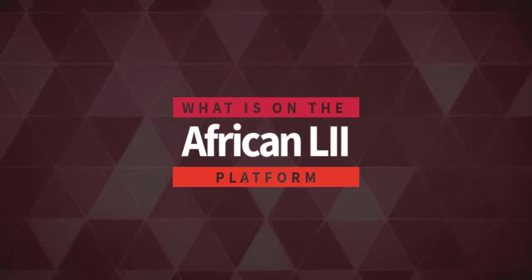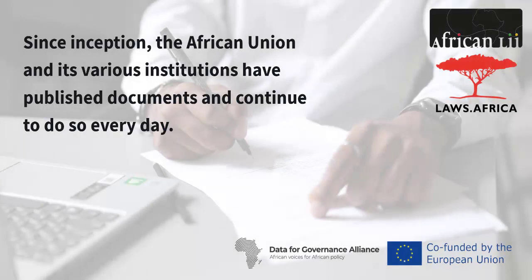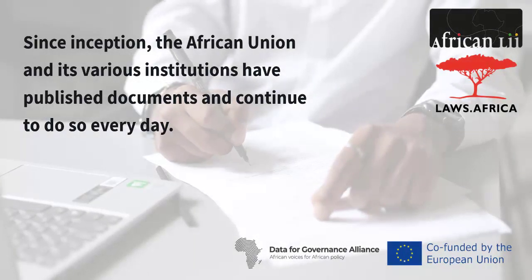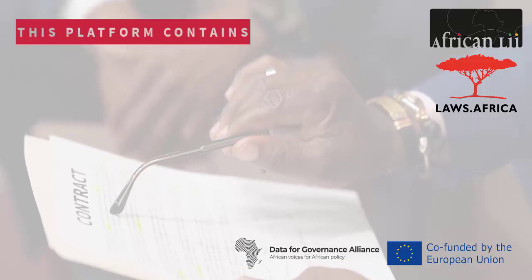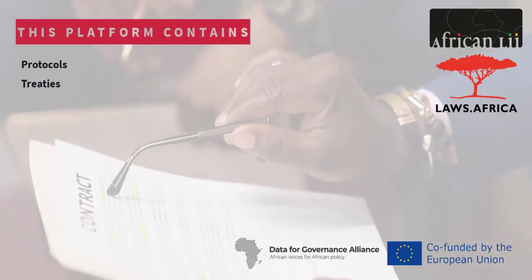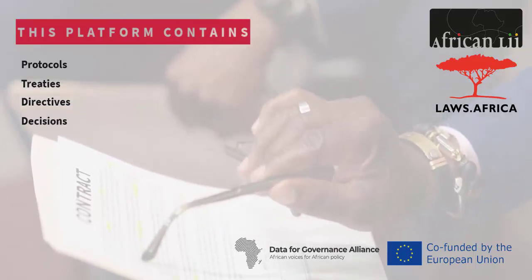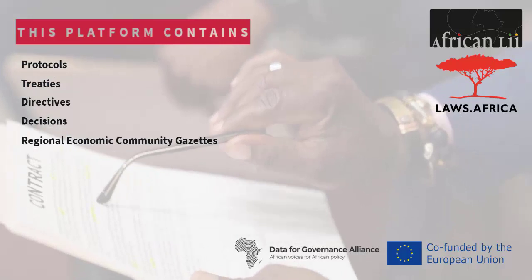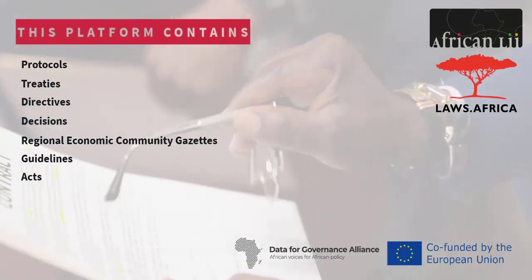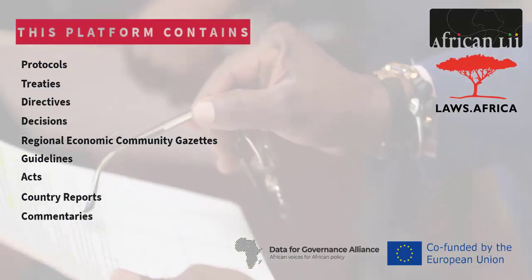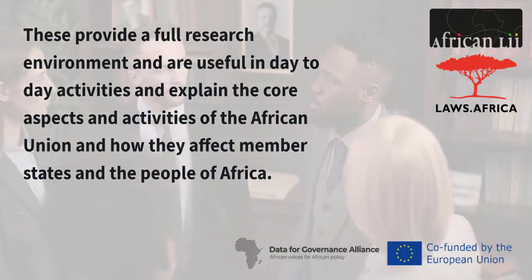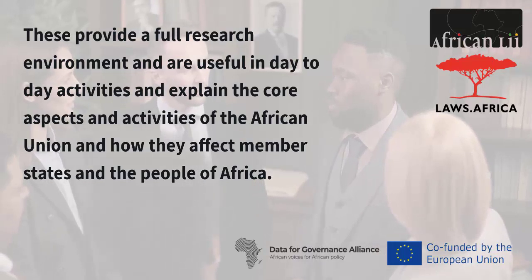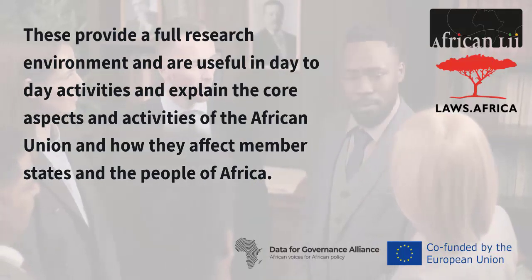Since inception, the African Union and its various institutions have published documents and continue to do so every day. This platform contains documents such as protocols, treaties, directives, decisions, regional economic community gazettes, guidelines, acts, country reports, commentaries, and communiques. These provide a full research environment, are useful in day-to-day activities, and explain the core aspects and activities of the African Union and how they affect member states and the people of Africa.